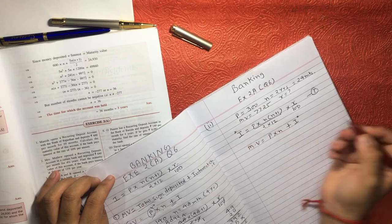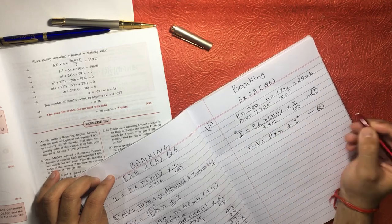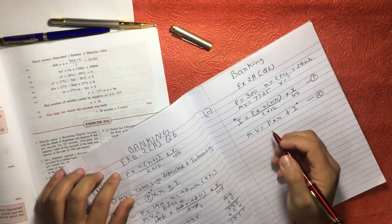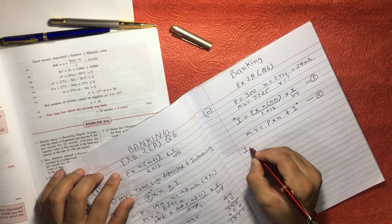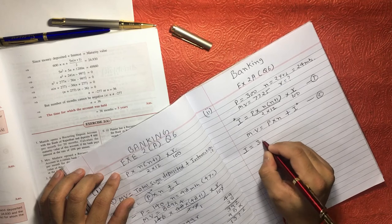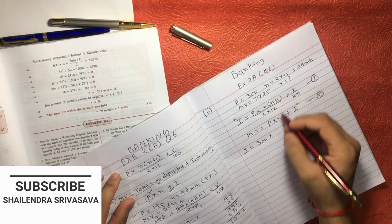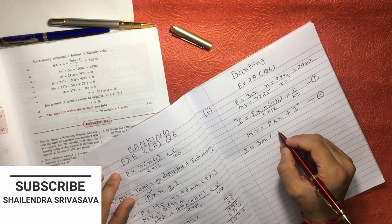That is one formula and another formula we are going to use is maturity value is equal to P into N plus I. Here I means this one, right? This is our formula number 2. Let's try to solve this question using these two formulas. So I is equal to P. P is what? 300. 300 into N. N is what? 2 years, that means 24 months.